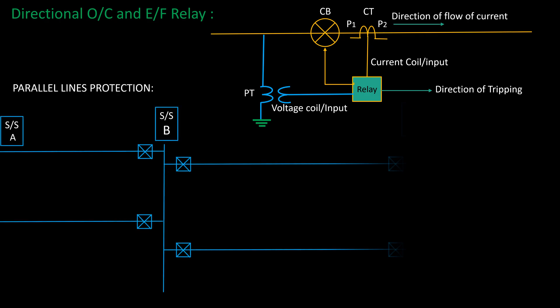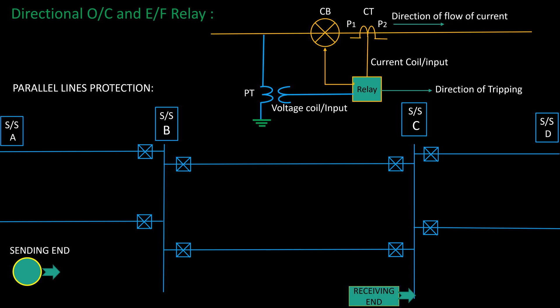Directional overcurrent protection can be applied on a power system where two or more lines running in parallel to increase power availability.